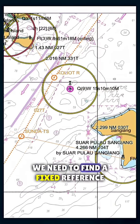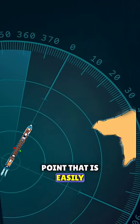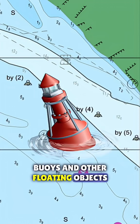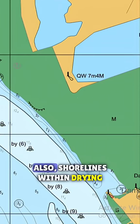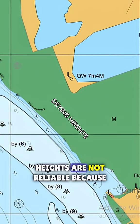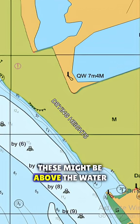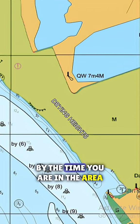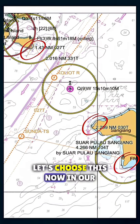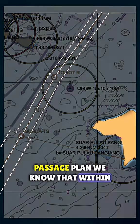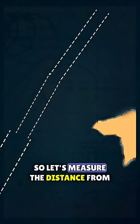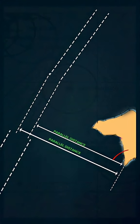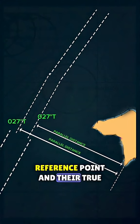First, in a chart, we need to find a fixed reference point that is easily recognizable in radar. Buoys and other floating objects are not included because they can drift away any time. Also, shorelines within drying heights are not reliable because these might be above the water by the time you are in the area. Let's choose this. Now, in our passage plan, we know that within these cross-track, our ship is safe. So let's measure the distance from both these lines from our reference point and their true course.